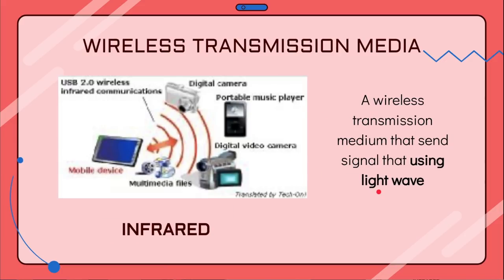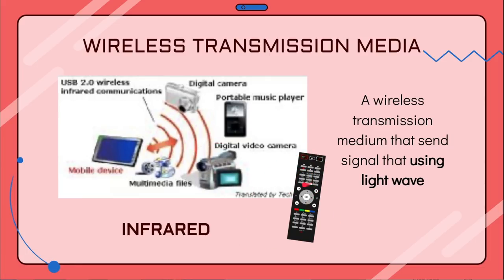Then we have infrared. Infrared is a wireless transmission medium that sends signals using a light wave — specifically a red light wave. Infrared works over short distances, such as with a remote control. When you press a button on your remote, a light comes out. One thing about infrared is that the connection is very fragile: you must point directly at the device you want to send signals to, and you cannot send the signal if there is an obstacle blocking the path.